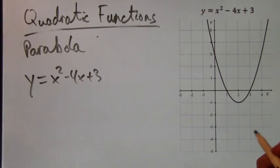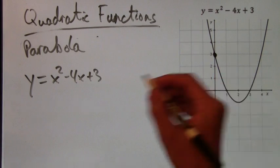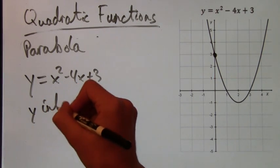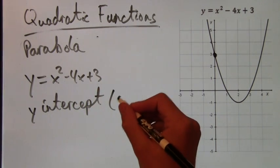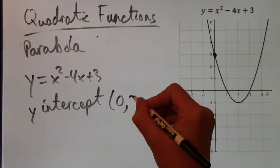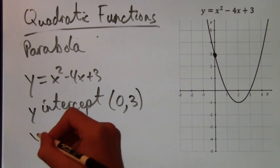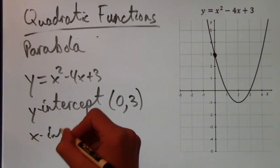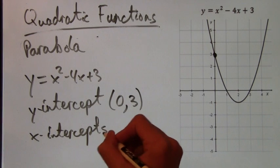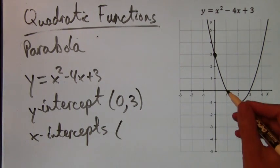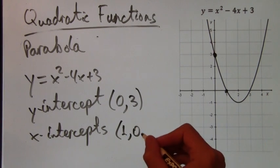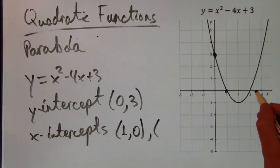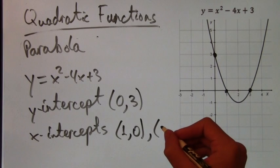Some things quadratics have in common with lines, linear functions, is that they still have y and x intercepts. So here we have a y intercept 0, 3, because it's 3 above the origin. And there are 2 x intercepts. Lines only have 1 x intercept, but quadratics can have 2. So in this case, we have 2 x intercepts: 1, 0 and 3, 0.